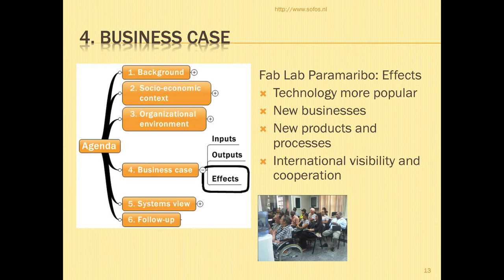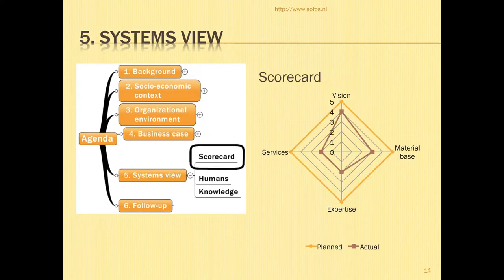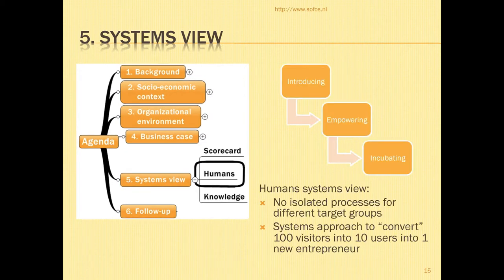We do that by our systems approach. We have here presented a short scorecard of our FabLab — you see the vision, the material base, the expertise, the services, and the current state. It is clear that especially the field of expertise, full-time staff and well-educated staff, is very important for us to work upon. Our systems view is oriented at the humans and at the knowledge.